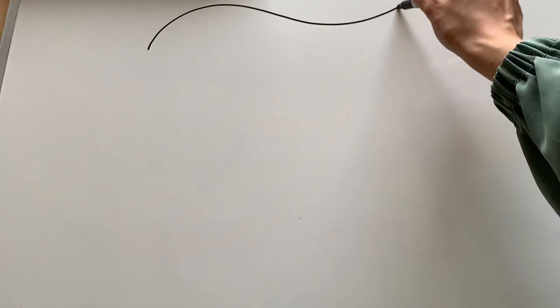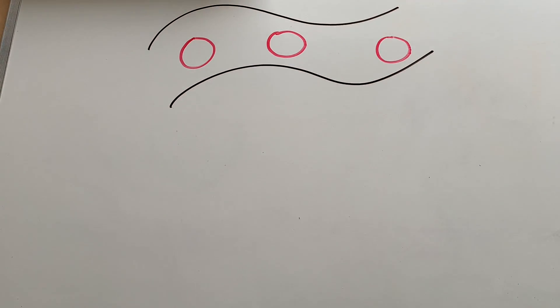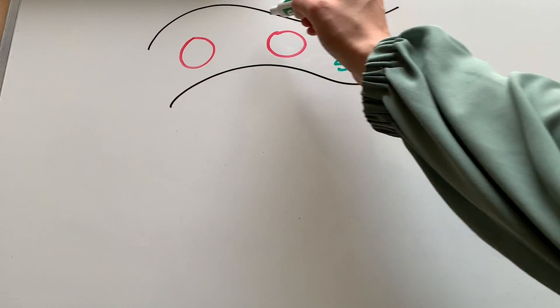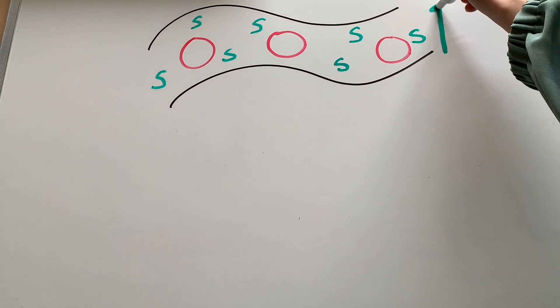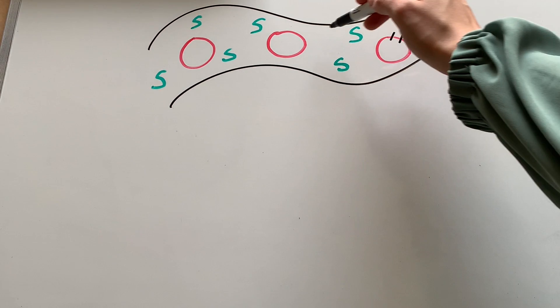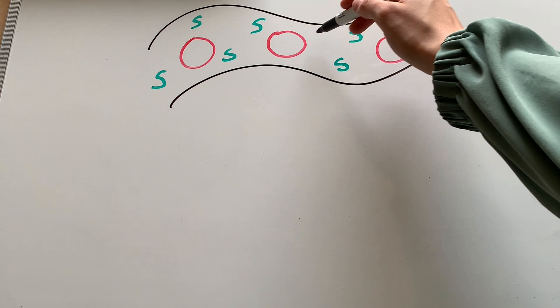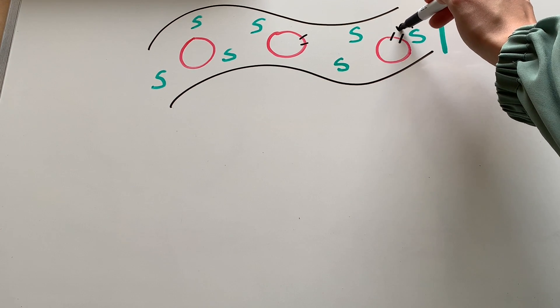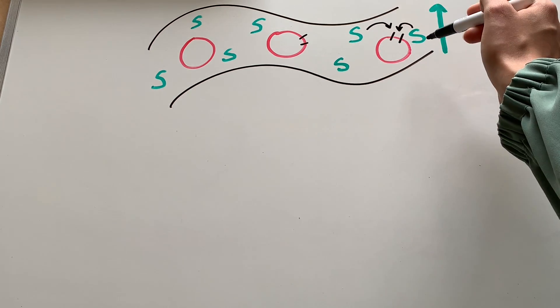Let's pretend this tube is your bloodstream and these circles are your body's cells. In order for you to get energy to do your everyday tasks like walking or reading, you need sugar from food. These S's that I'm drawing are sugar in our blood that comes from food. And now this sugar has to go into these cells, just like gas needs to go into a car in order for it to move.